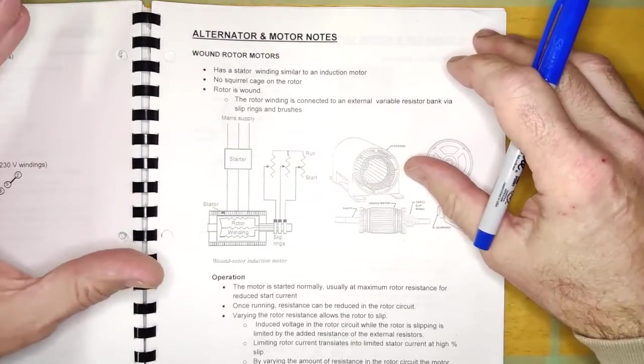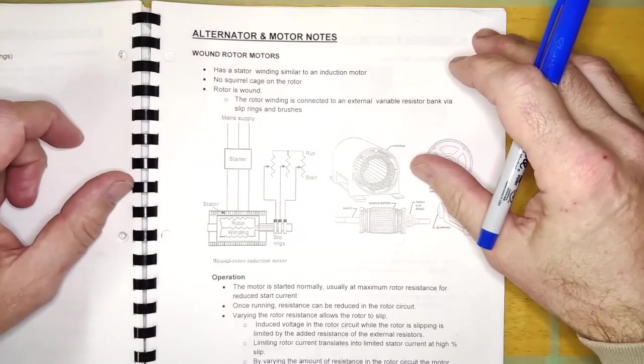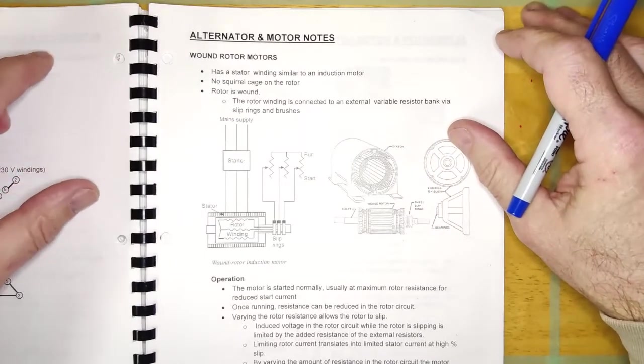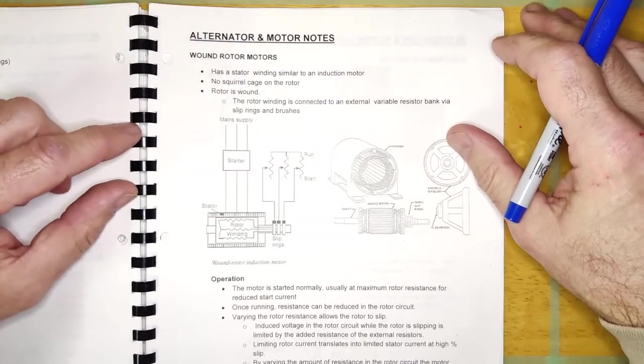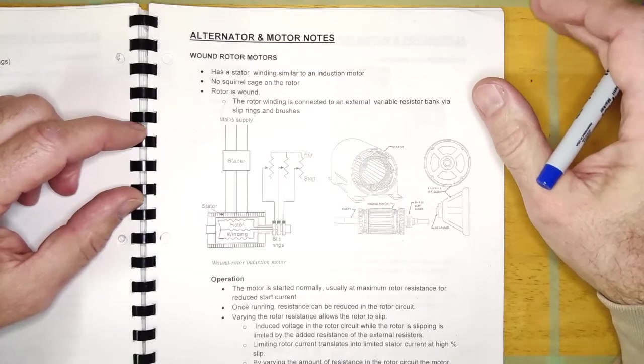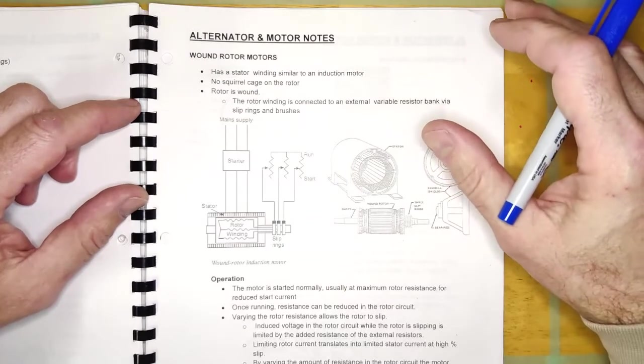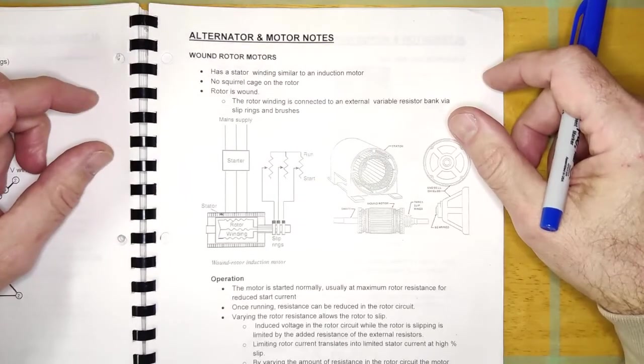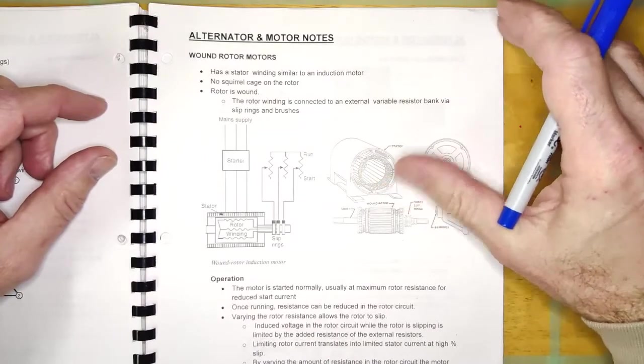And so, before the advent of the VFD, which is the variable frequency drive, there was no real practical way to allow an induction motor to run slowly or have variable speed. And so, if you wanted a variable speed motor back in the day, guys, you basically had to go with a DC motor. A DC motor is easy to vary the speed. You just lower the armature voltage and it'll run slower. And you can overspeed it as well. This isn't about DC motors though.